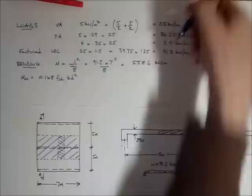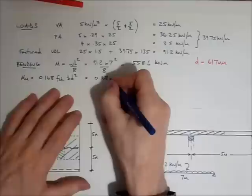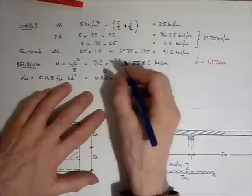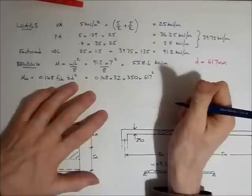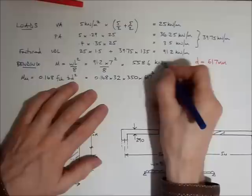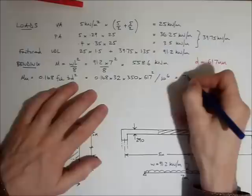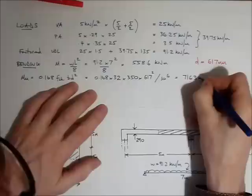Great. So MU, I'm now going to calculate MU, so it's 0.168 times fck, we said at the start that there's 32 newton concrete, times B, it's a 350 wide beam, times D squared, or we've worked out D, 617, all squared. Now that's going to give me an answer in newtons and millimetres. However, I want my answer in kilonewton metres. So I'm going to divide it by 10 to the power 6, just to make the conversion for the units. That gives me an answer of 716.3 kilonewton metres.